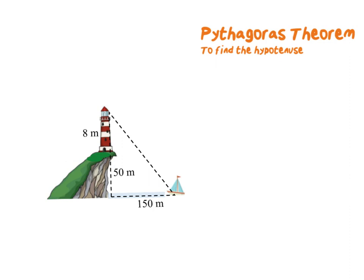Let's put this in context. Say for example you have a lighthouse that's on a cliff, so the cliff has a height of 50 meters and the light tower has a height of 8 meters, and there's a ship 150 meters out in the sea.